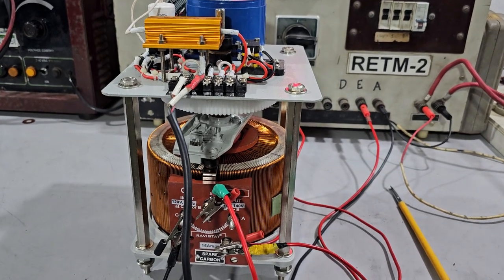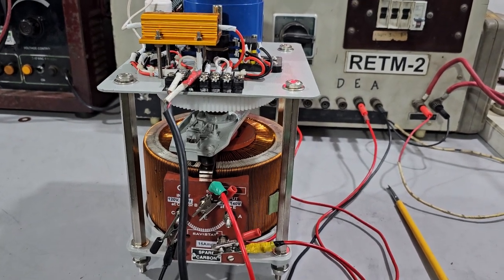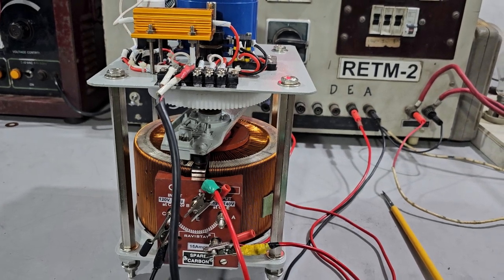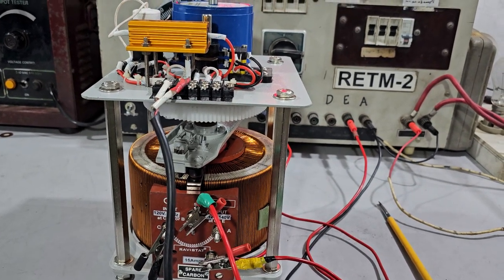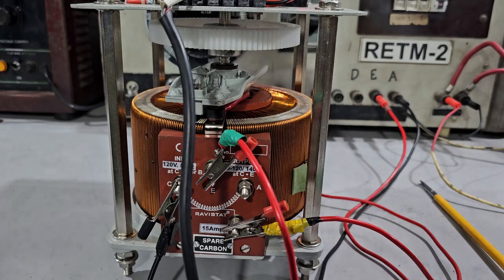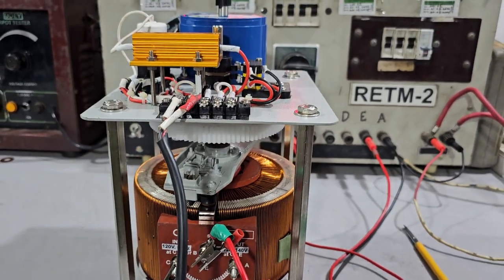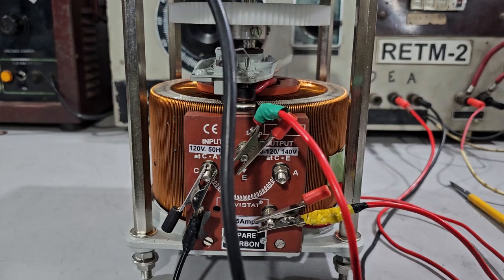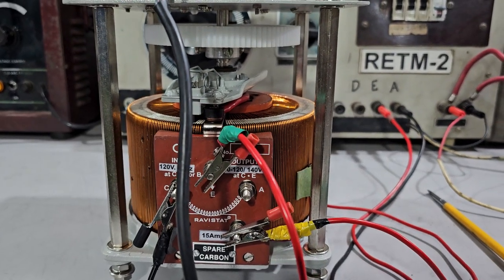Welcome to Ravi Electricals Private Limited, brand name RaviStat. This is a variable transformer, model number 15A US15FM1. This is a 15A variable transformer with input 120V, output 0 to 140V, single-phase motorized variable transformer.